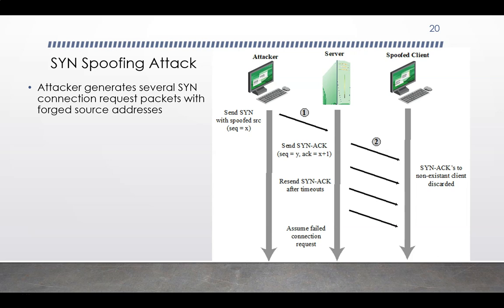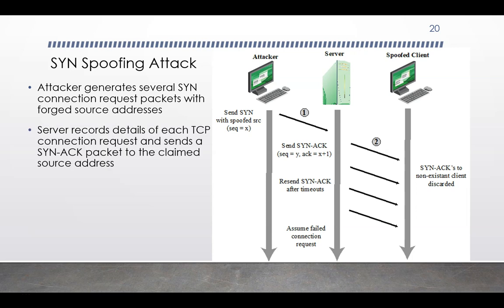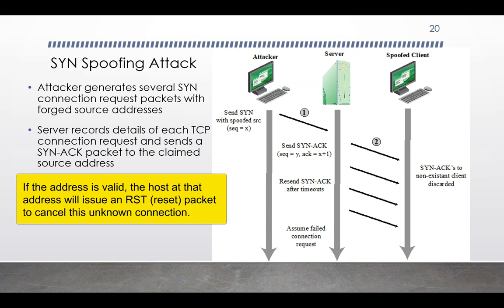Let's take a closer look at the SYN spoofing attack. In this attack, the attacker generates several SYN connection request packets with forged source addresses. The server responds by recording details of each TCP connection request and sends a SYN ACK packet to the claimed source address. If there is a valid system at this address, that system will respond with an RST packet — a reset packet — to cancel the unknown connection request. When the server receives this packet, it cancels the connection request and removes the saved information.